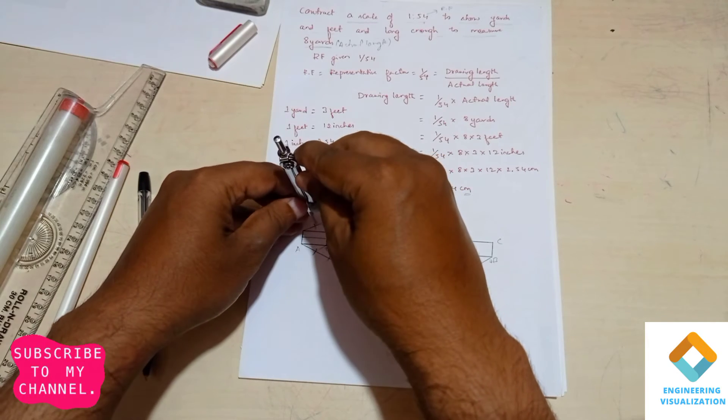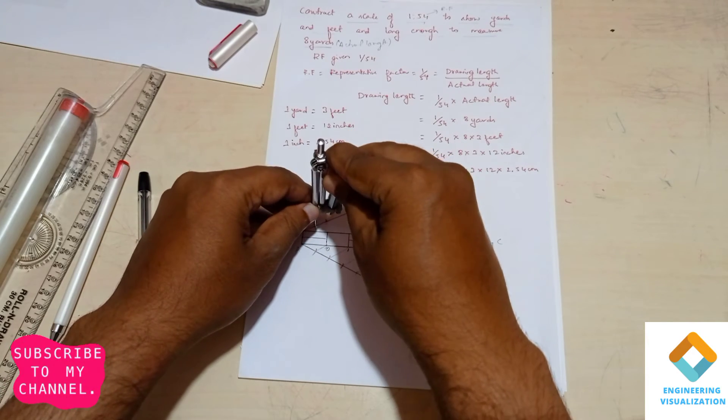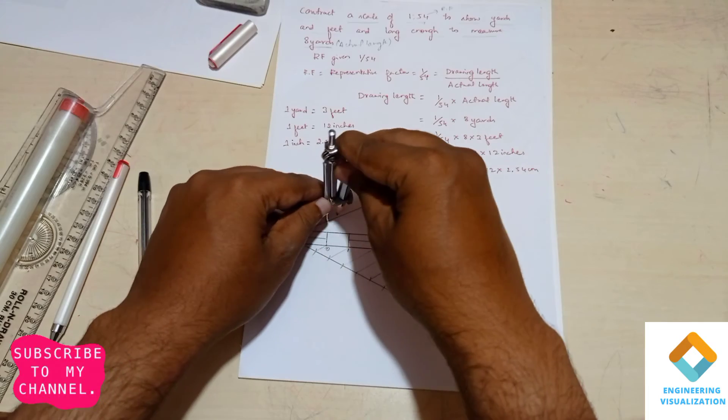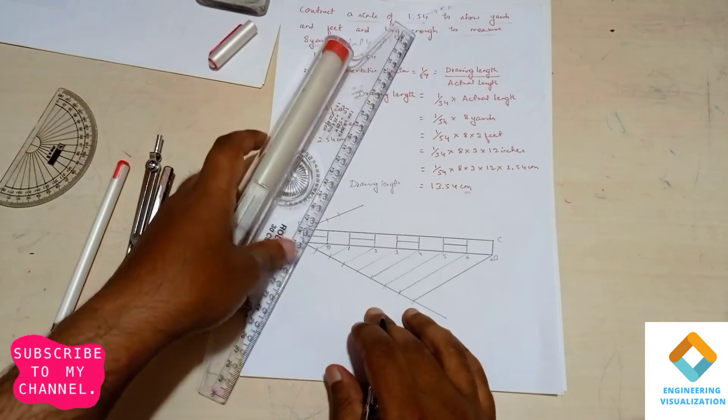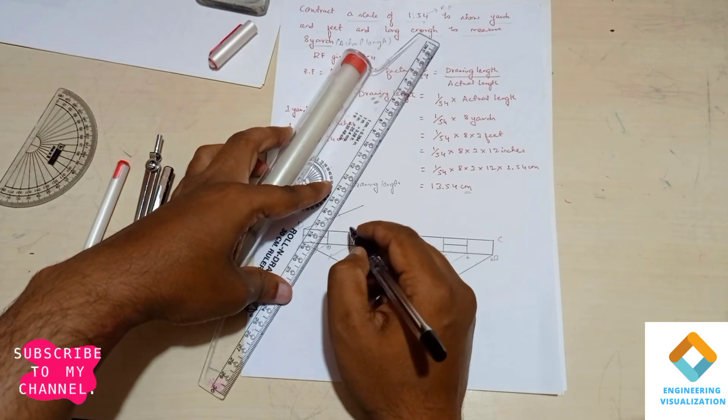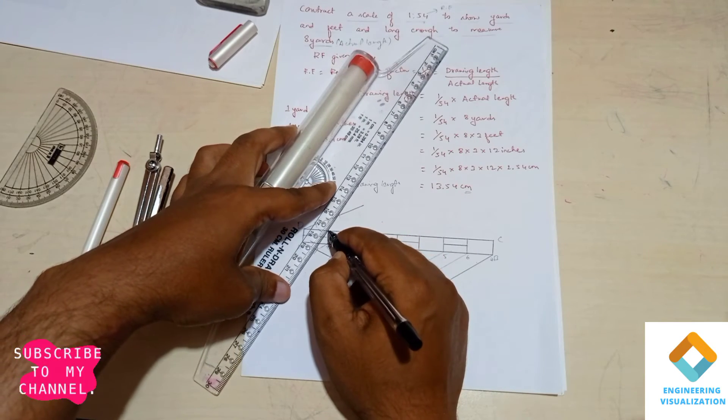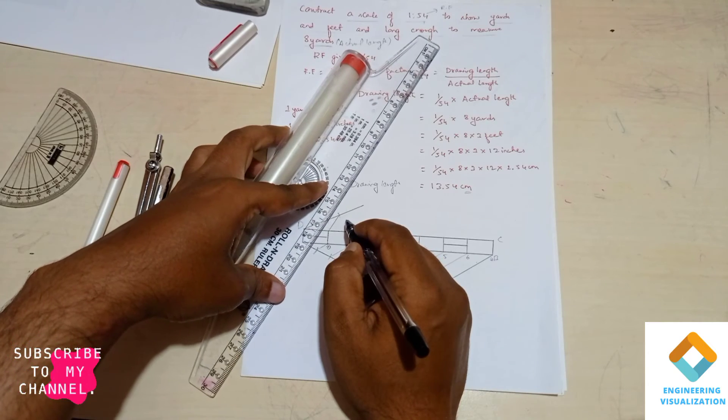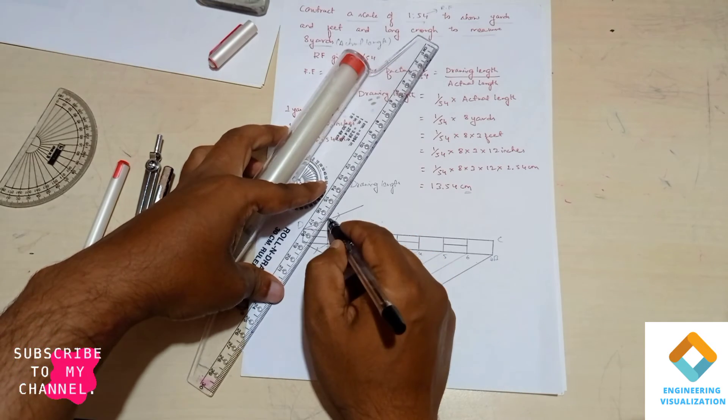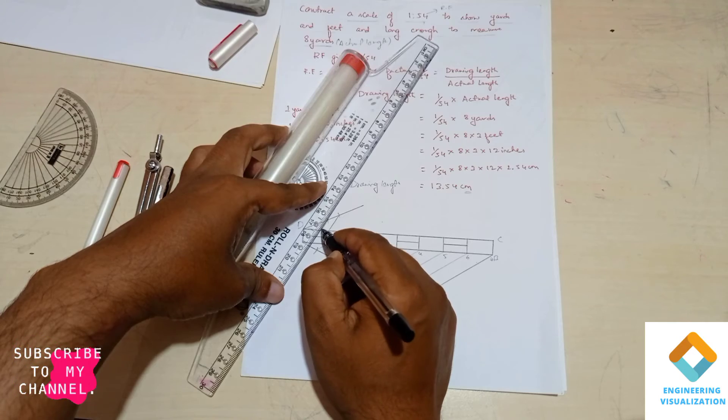Join that extreme cut point with that end. Join it. Try to join, draw the parallel line using this roller scale.